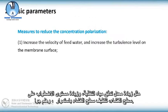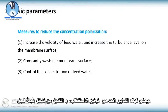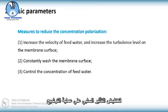These include increasing the flow rate of feed water, increasing the turbulence level on membrane surface, constantly cleaning the membrane surface, and so on. These measures can suppress concentration polarization and alleviate the formation of gel layer so that the negative effect on filtration is reduced.